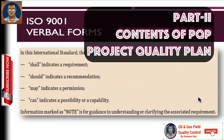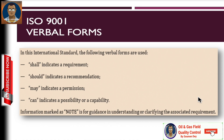Before going to the quality management principles, let us discuss some basic requirements. In any standard — not just ISO 9001, but any international or national standard — 'shall' indicates a mandatory requirement, 'should' is a recommendation, 'may' indicates a permission, and 'can' indicates a possibility or capability. Any information marked as a note is guidance in understanding and clarifying the associated requirement.